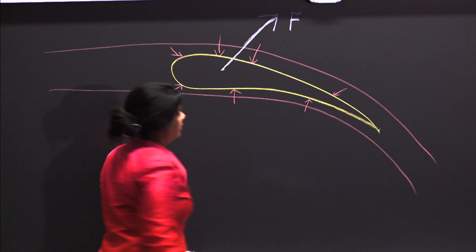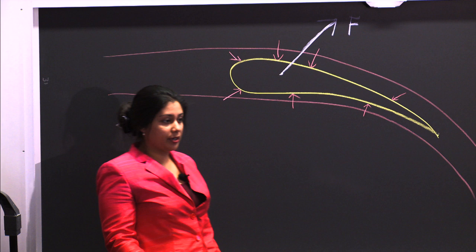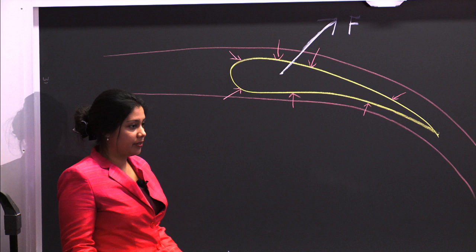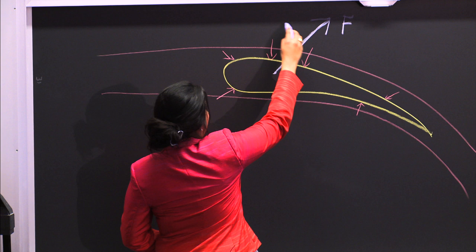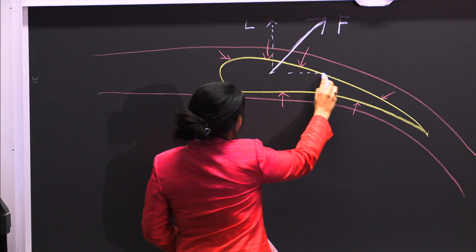That's the force generated when the fluid is moving forward. Force is a vector, so it has direction as well as magnitude. There's a vertical component and a horizontal component. We call the vertical component the lift, and the horizontal component is drag.